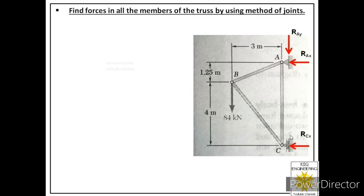We have completed the first step: we applied the reactions on this free body provided by the supports. Now we need to find these reactions — these are unknown values. We don't know the values of these three reactions provided by these two supports. The next step is to find the values of these three unknowns.